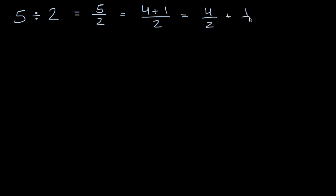Five halves is the same thing as four plus one over two, which is the same thing as four halves plus one half. Four halves is two. Let me do that in a different color. This part over here is two, and then you have this one half. So it's the same thing as two and a half.